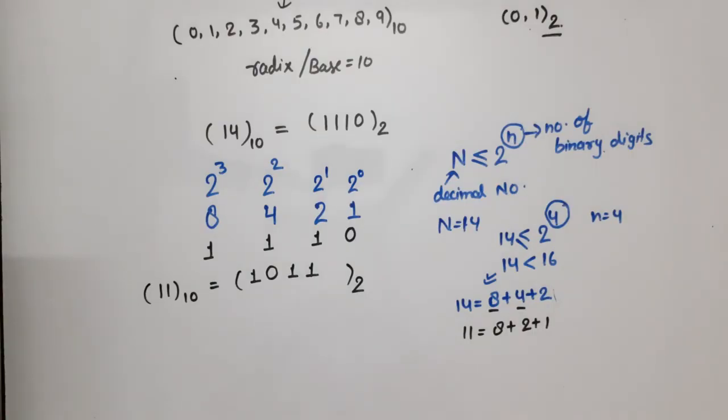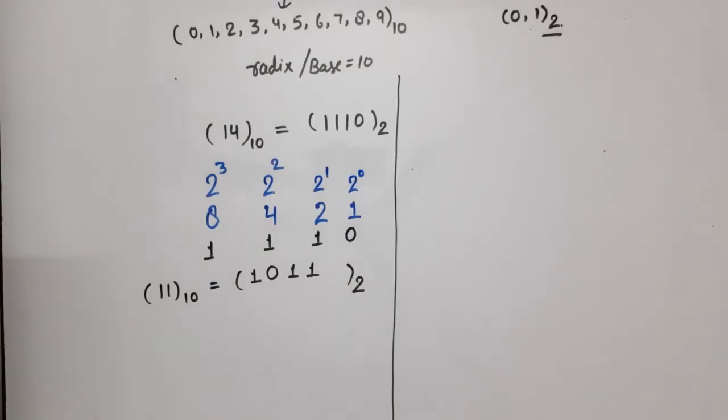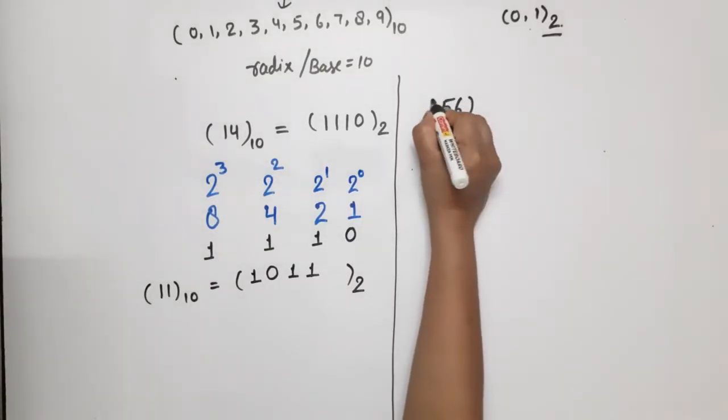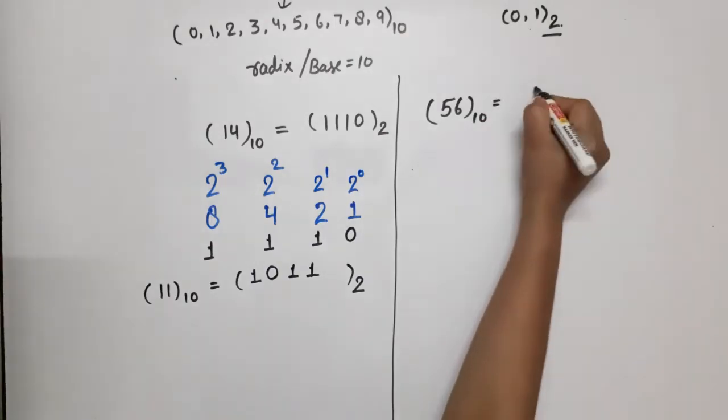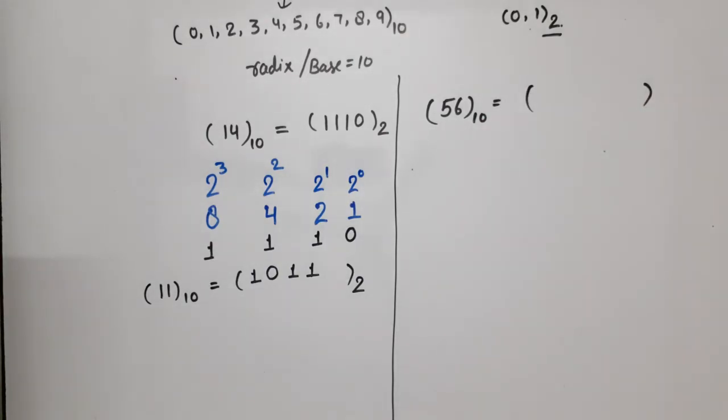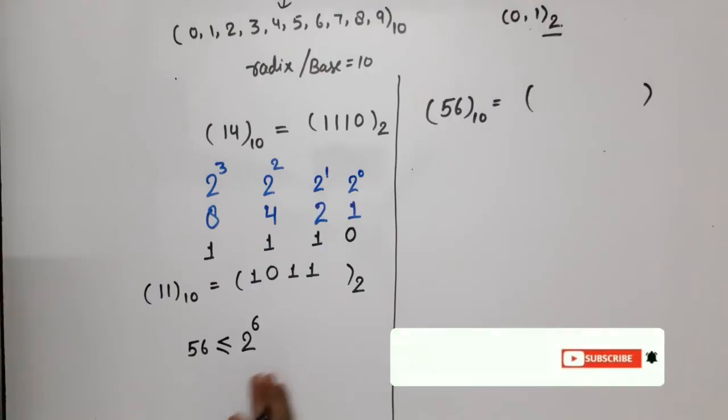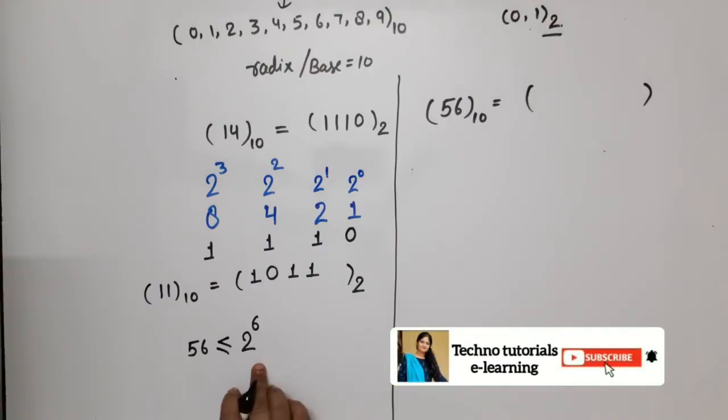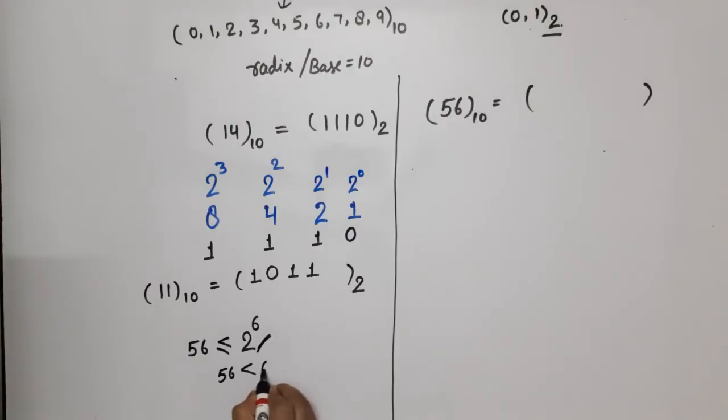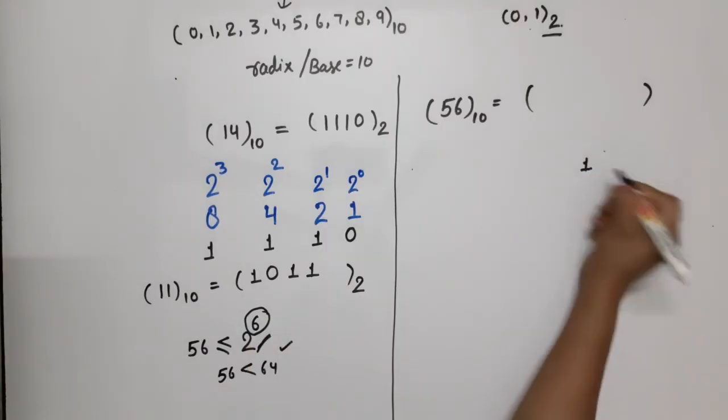Let's take a bigger number. Suppose I have 56 in decimal and we have to find it in binary. First, how many bits are required? 56 is less than or equal to 2 raised to power n. If we have 5, we get 32 and we need greater, so 2 raised to power 6, which is 64. This condition is satisfied, so our number is 6 - we have to use 6 bits.